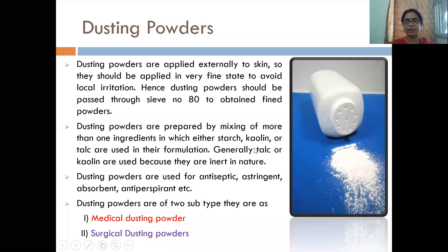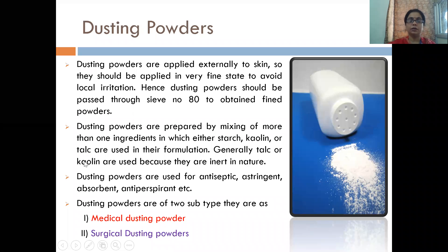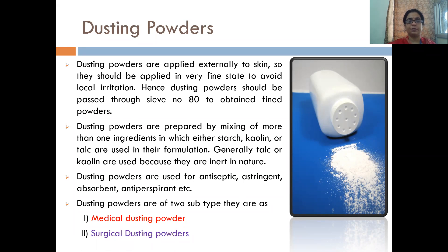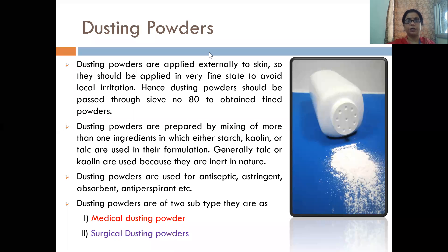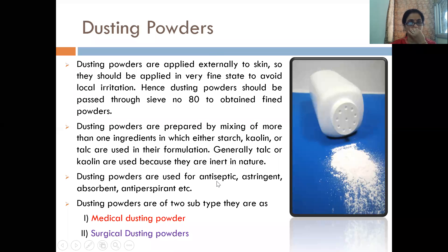Generally talc and kaolin are used because they are inert in nature. Normally the main ingredient in the dusting powder is talc. The color of talc is white; kaolin is a little pinkish. So if we give our dusting powder a pinkish shade, we use kaolin. Dusting powders are used for antiseptic action, as astringent, absorbent, and antiperspirant. Antiperspirant prevents sweating; absorbent absorbs moisture; astringent cleans the pores through coagulation; and antiseptic prevents microbial growth.